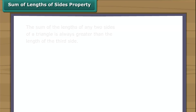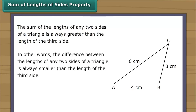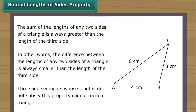The sum of the lengths of any two sides of a triangle is always greater than the length of the third side. In other words, the difference between the lengths of any two sides is always smaller than the length of the third side. Three line segments whose lengths do not satisfy this property cannot form a triangle.